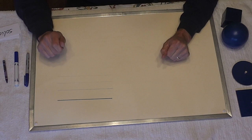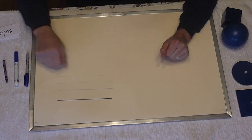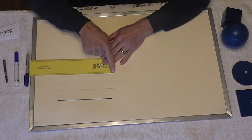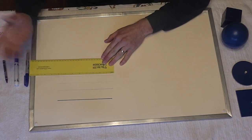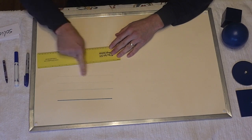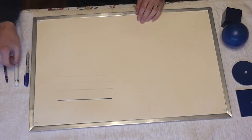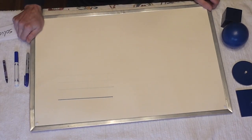A line has no thickness, and a line can only be measured in one dimension. We'll call it left to right. So we can only measure a line in one dimension. It has no thickness.